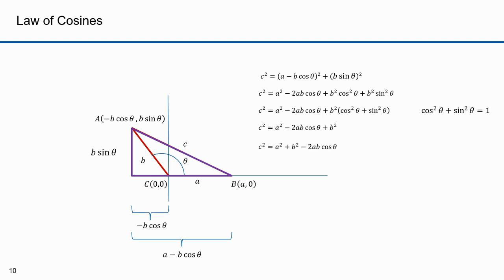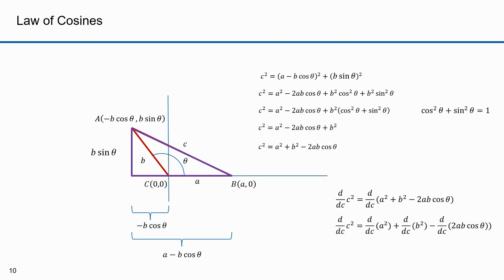For the shell theorem derivation I'll also need the derivative of the law of cosines with respect to c. The derivative of c² is 2c; a and b are constants so their derivatives are zero. The derivative of 2ab cosθ is 2ab sinθ, and since θ is a function within the cosine the chain rule requires adding dθ.